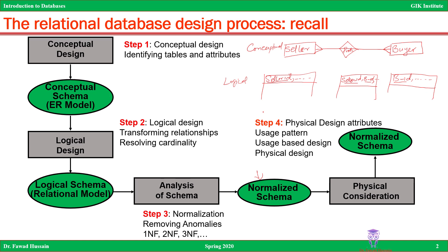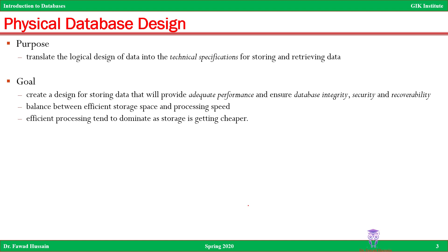From here, this is just on paper — you need to implement this on the physical machine. For that, there are certain considerations you have to take into account before implementing it on the machine, and in this video we are going to look at those considerations and how you will transform the logical normalized schema into the physical design. The purpose of the physical database design is to translate the logical design of the data into the technical specification for storing and retrieving data.